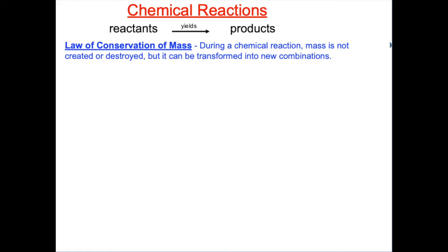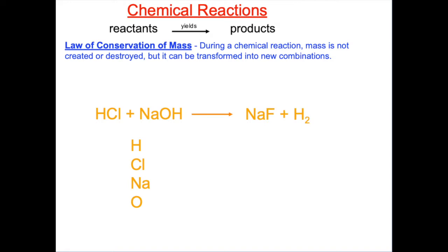Let's look at an example: hydrochloric acid being mixed with sodium hydroxide. In the reactants, we have hydrogen, chlorine, sodium, and oxygen. In the products, we cannot have sodium, fluorine, and H2. Where did this fluorine come from? And what happened to the oxygen?